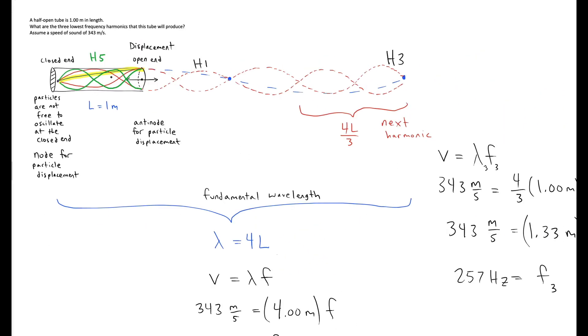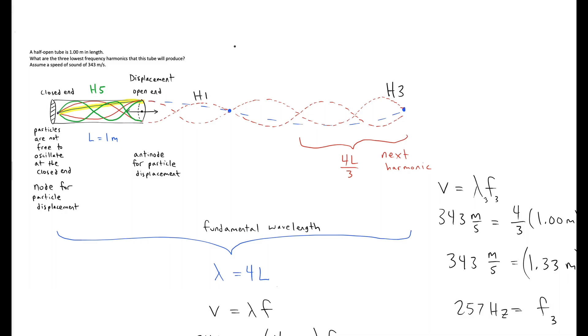As we can see, we have a complete cycle of H5 inside the length of the tube. We have one and a quarter waves completed.